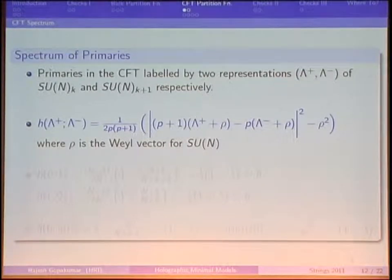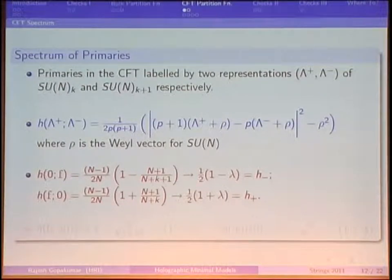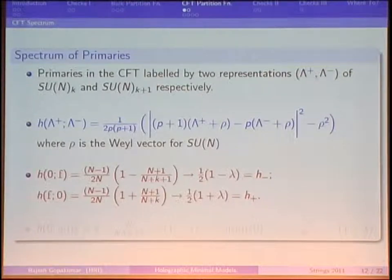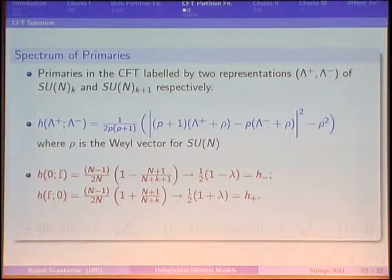To give some examples of what these dimensions look like: the simplest case is taking the trivial representation for both λ+ and λ−, giving zero — that's the vacuum primary. If you take λ+ to be zero and λ− to be the fundamental, for any finite N and k you get a certain expression, but in the large-N and k limit it gives H− = ½(1 − λ). Taking the other combination — fundamental with zero — gives H+ = ½(1 + λ). Note that the sum adds up to one only in this 't Hooft limit.